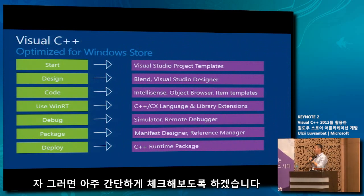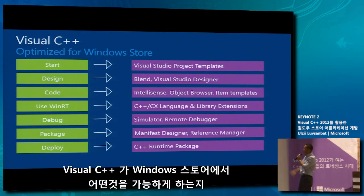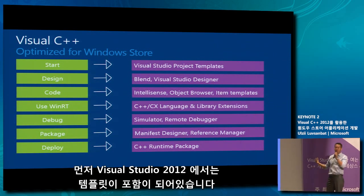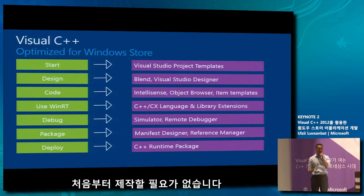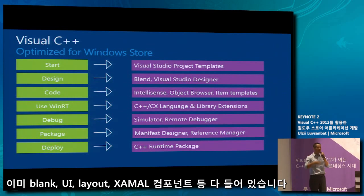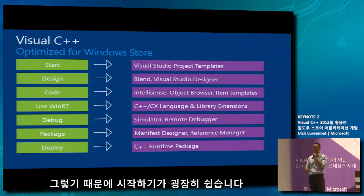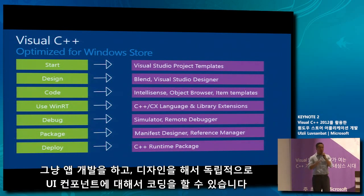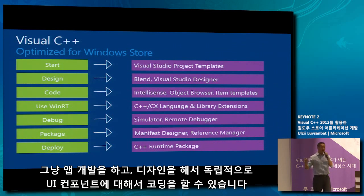Here's a quick overview of what Visual C++ does inside the Windows Store. Visual Studio 2012 comes with project templates — you don't have to write boilerplate code from scratch. Templates give you blank UIs, layouts, XAML, components, everything to make it easy to start up. Blend is available for C++, meaning you can design your UI without knowing anything about the code. You can give the UI part to someone who doesn't know programming and let them design it, while you independently program against those UI components designed in Blend. That's very cool.